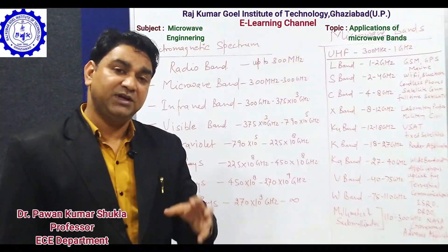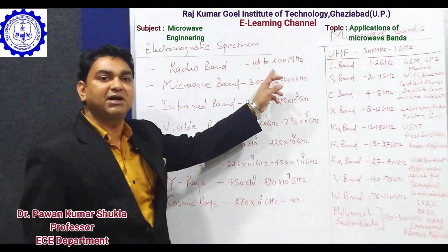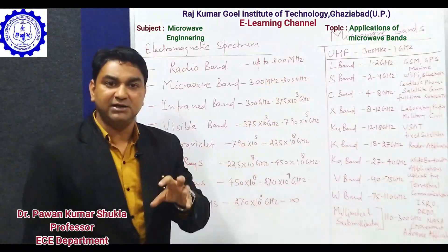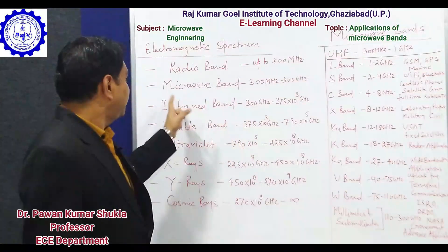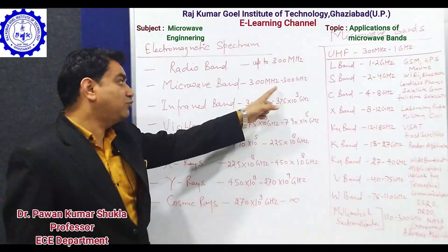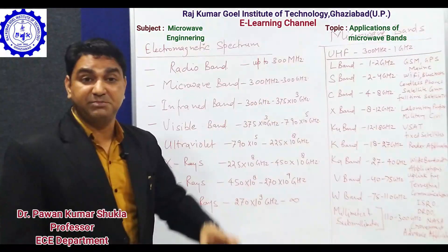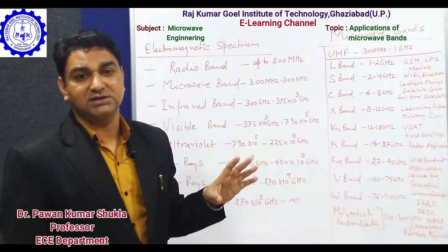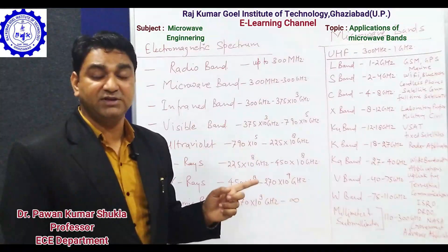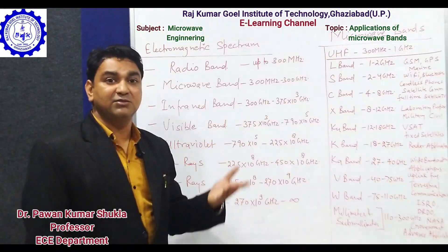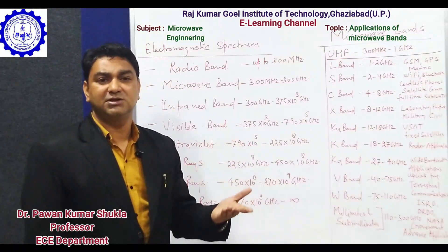After VHF, when the Ultra High Frequency band starts from 300 megahertz, the microwave band comes into existence. The microwave band extends up to 300 gigahertz, and this particular band is specified for a large number of applications including satellite communication, radar communication, and mobile communication.